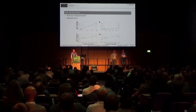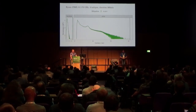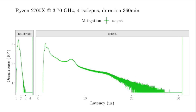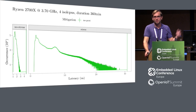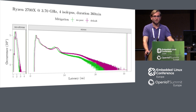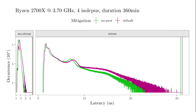Let's continue with the AMD system, the Ryzen 2700X. The distribution of the latencies is pretty similar to the Intel processor. No protection versus default protection on AMD means we have the new microcode version and the Spectre variant 2 mitigation activated — we do not need to protect against Meltdown because the AMD system is not affected. If we activate the default mitigation, we have the same consistent picture as for the Intel processor, but it doesn't affect the overall behavior as much.